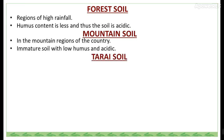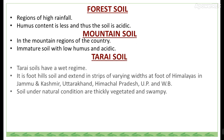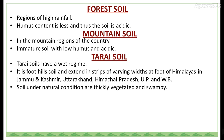Tarai soil has a wet regime. It is a foothill soil and extends in strips of varying width at the foots of the Himalayas in Jammu and Kashmir, Uttarakhand, Himachal Pradesh, UP and West Bengal. Under natural conditions, these soils are thickly vegetated and swampy.